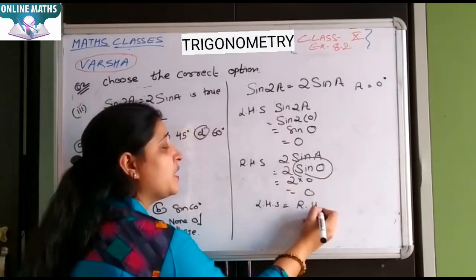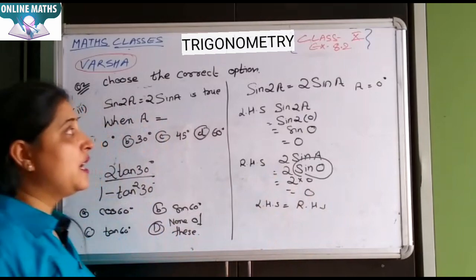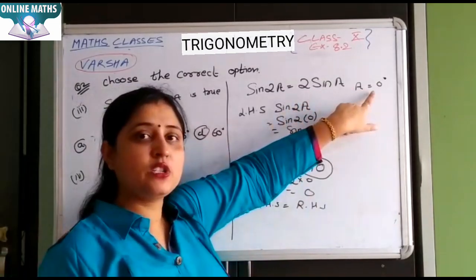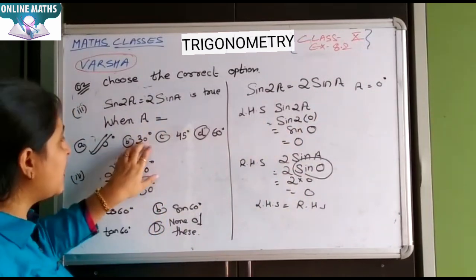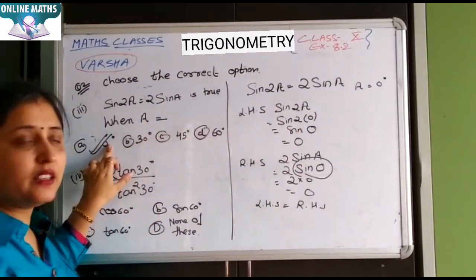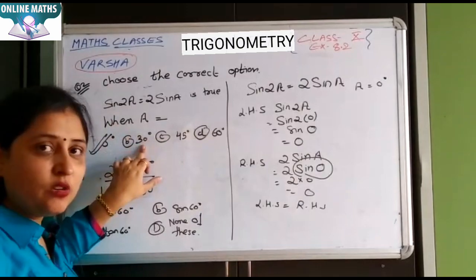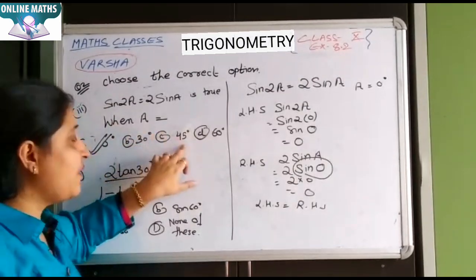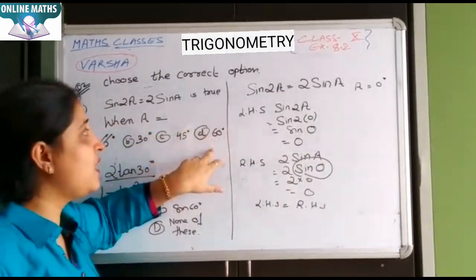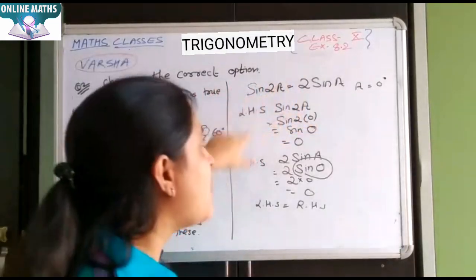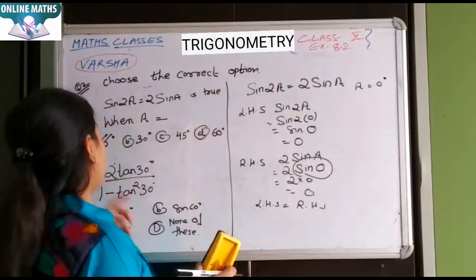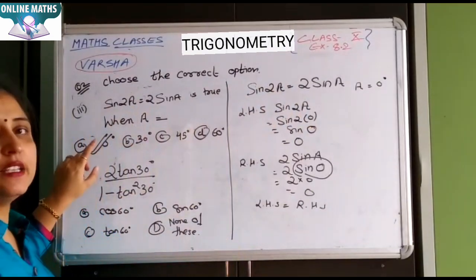Aapki dono si value put karne se dono ka answer equal hai. Jab hamne kya put karaya? A equals to 0. Aapka answer kya hai? A equals to 0. Similarly 30, agar aapka answer 0 pe nahi aata, to next 30 ki value ko put karke dekhna, 45 ki value ko put karke dekhna, 60 ki value ko put karke dekhna. But aapko yeh dekhna ki donu LHS is equals to RHS or not. It means your correct answer is A, 0 degree.